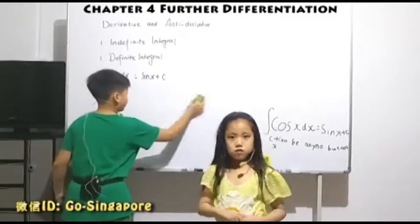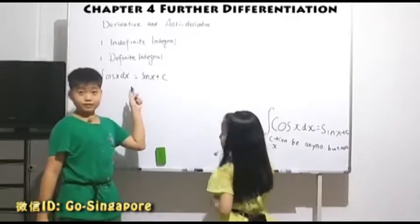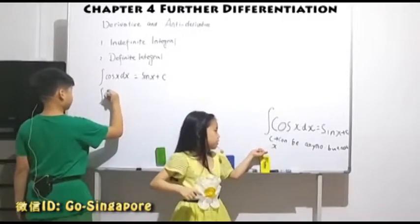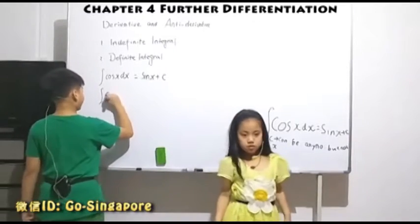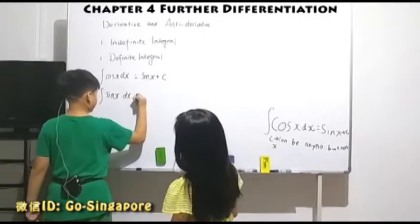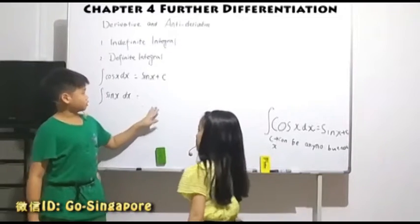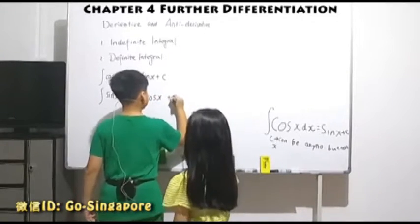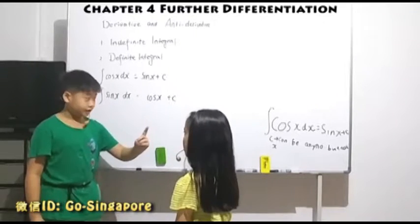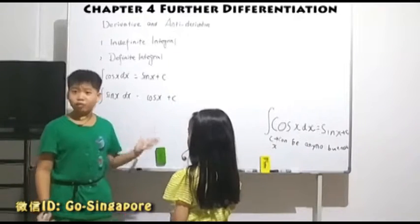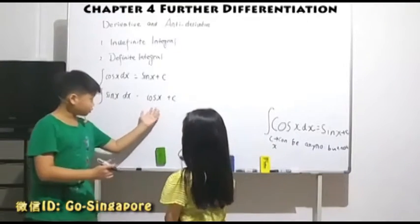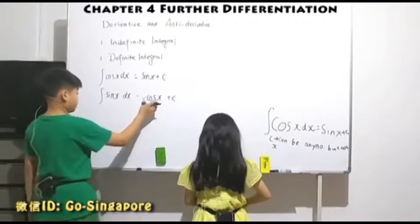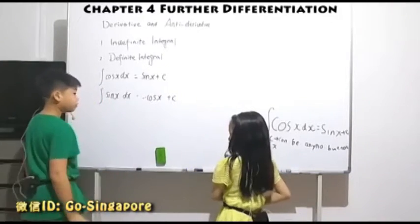What if I give you the integral of sine x? Can we just straight away write cosine x plus C? Remember the differentiation of cosine x — there will be a negative. But here, there's no negative. So the integral of sine x is negative cosine x plus C.